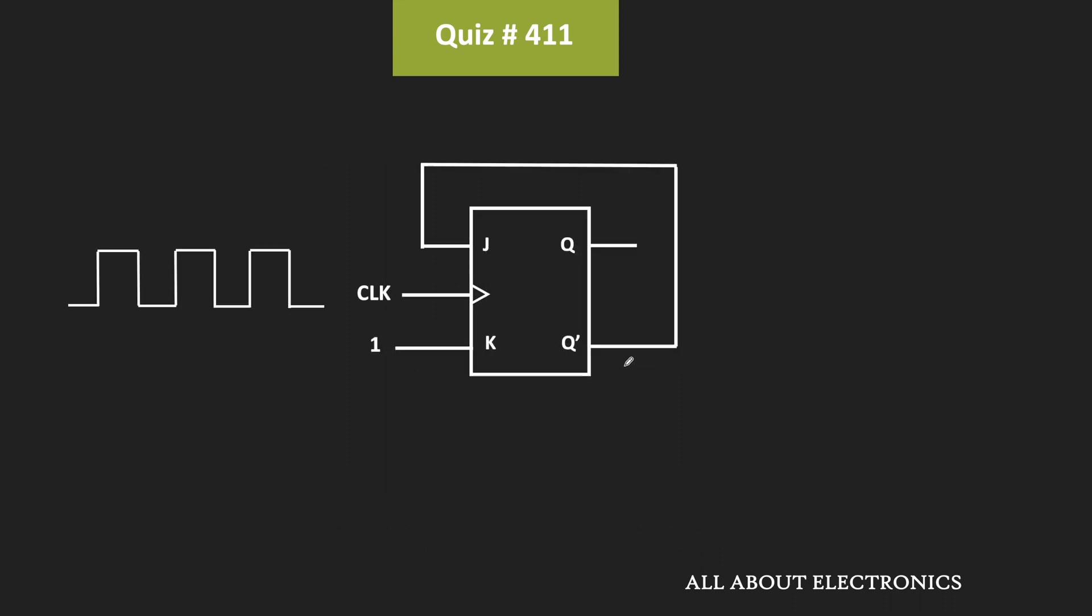So in this circuit, as you can see, the K input is connected to 1, while the Q output is connected to the J input. And here, the continuous clock pulses are applied to this clock input.